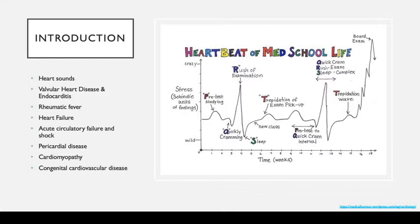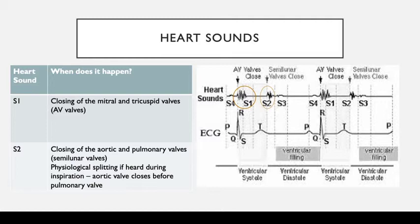To start off with, I'm going to talk about heart sounds. The basic heart sounds S1 and S2 — S1 is the closing of the mitral and tricuspid valves, or the AV valves. S2 is the closing of the aortic and pulmonary valves, or semilunar valves. You might have heard of something called splitting. Splitting is when you can hear S2 separated into two sounds. It can be physiological or pathological. Physiological splitting is usually heard in young adults — when that person breathes in, you hear the aortic valve closing before the pulmonary valve.